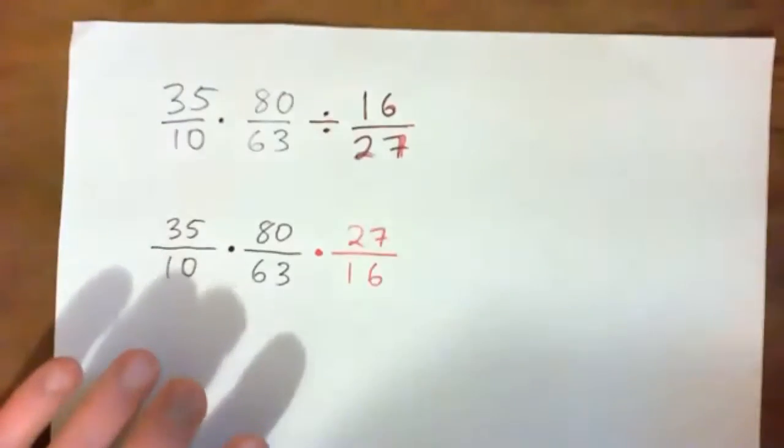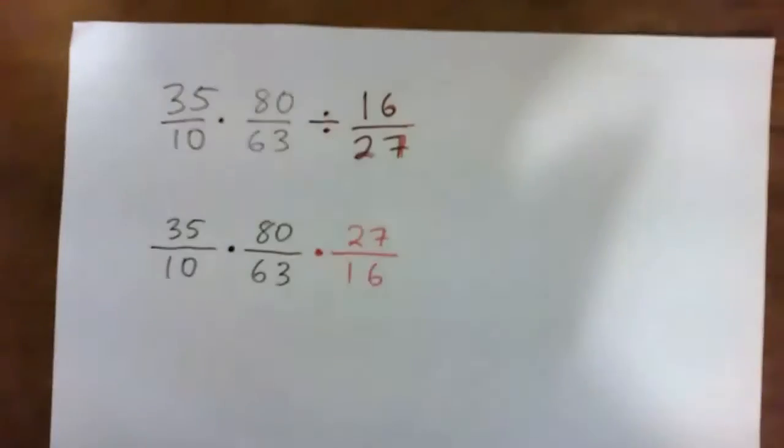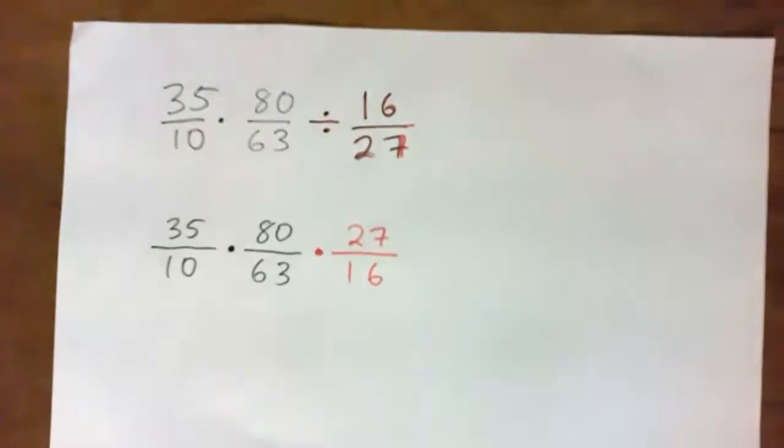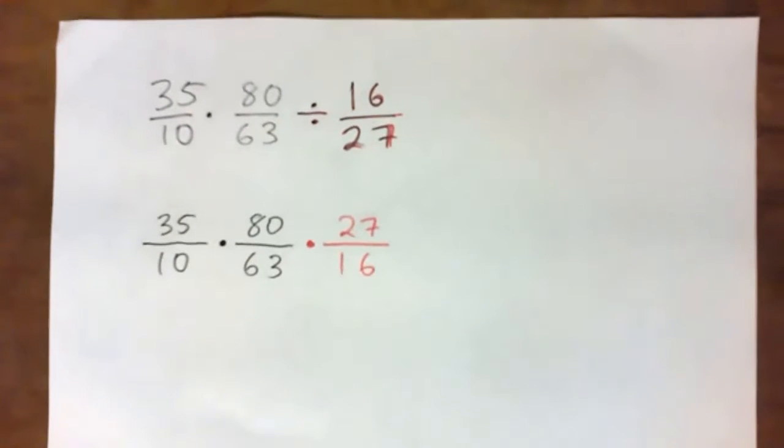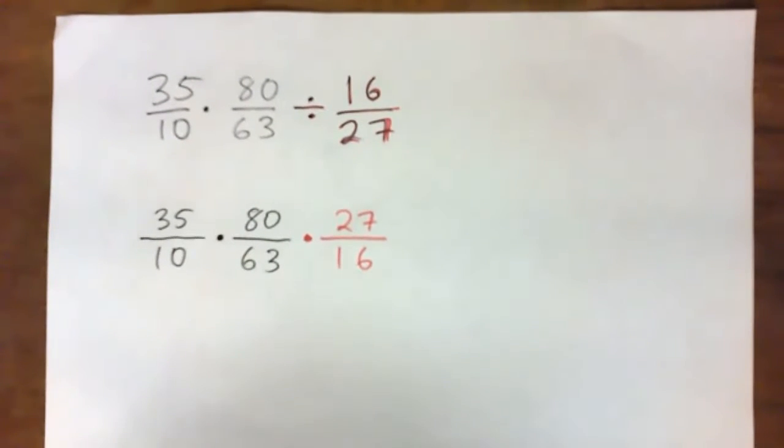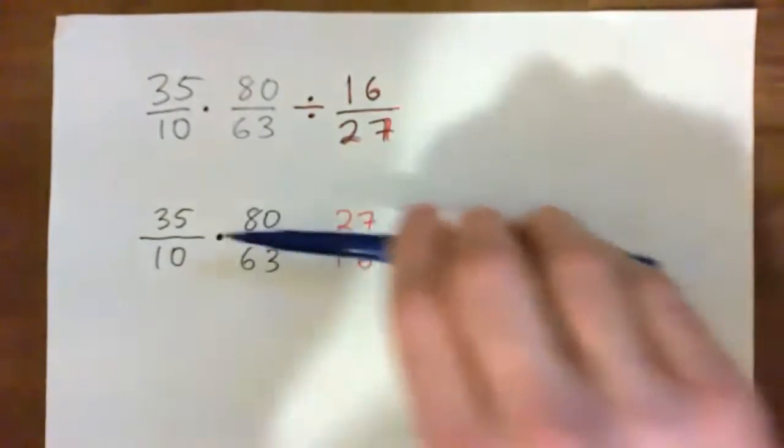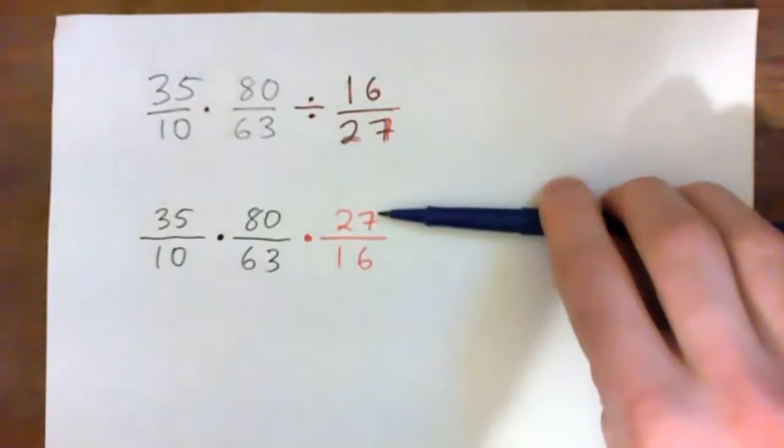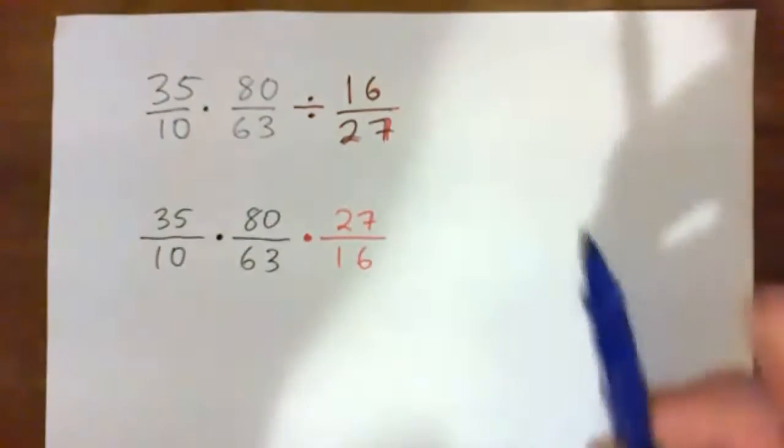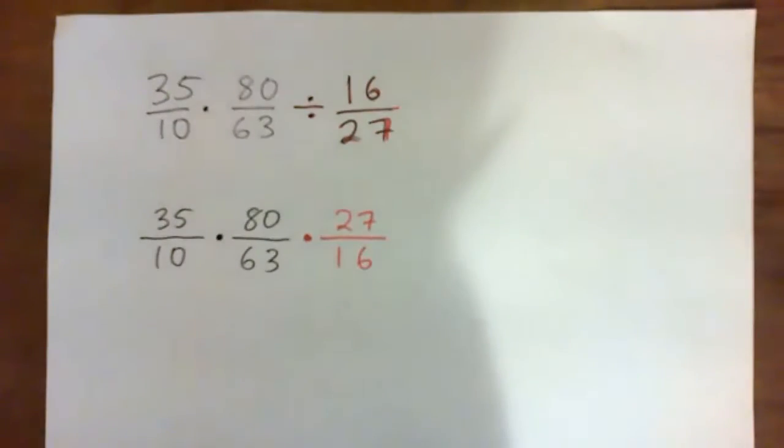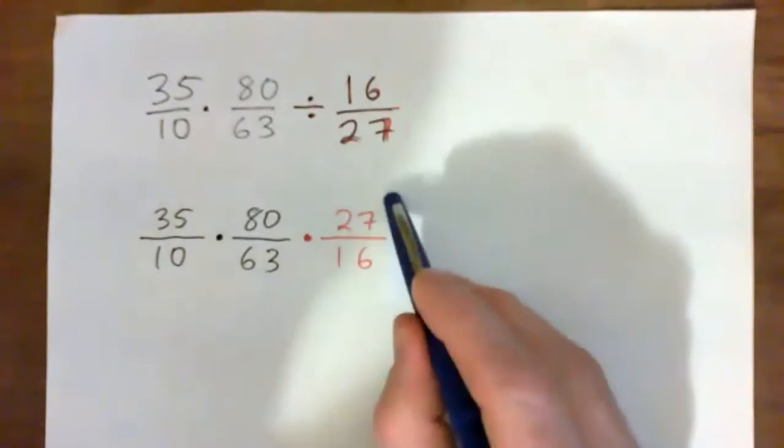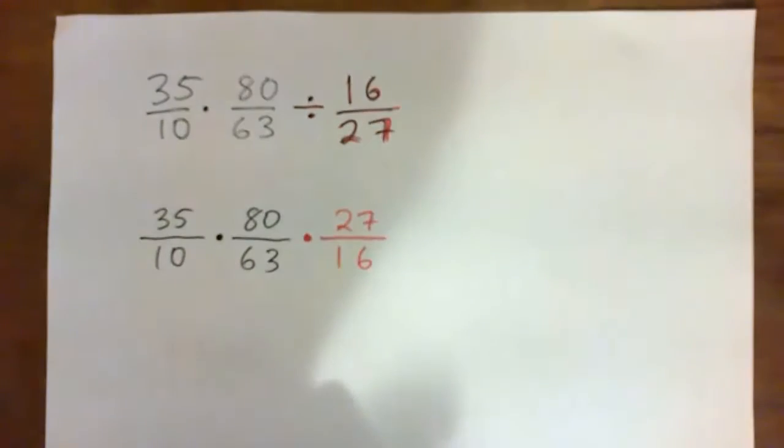Alright, so now we cross-cancel common factors. Now, the thing with this is you can cross-cancel in lots of different ways, but you have to remember two things. You must cross-cancel a number from the bottom with a number from the top. And that's pretty much it. So I'll give you some examples. We could say, okay, it looks like 9 goes into 27 and 63, right?